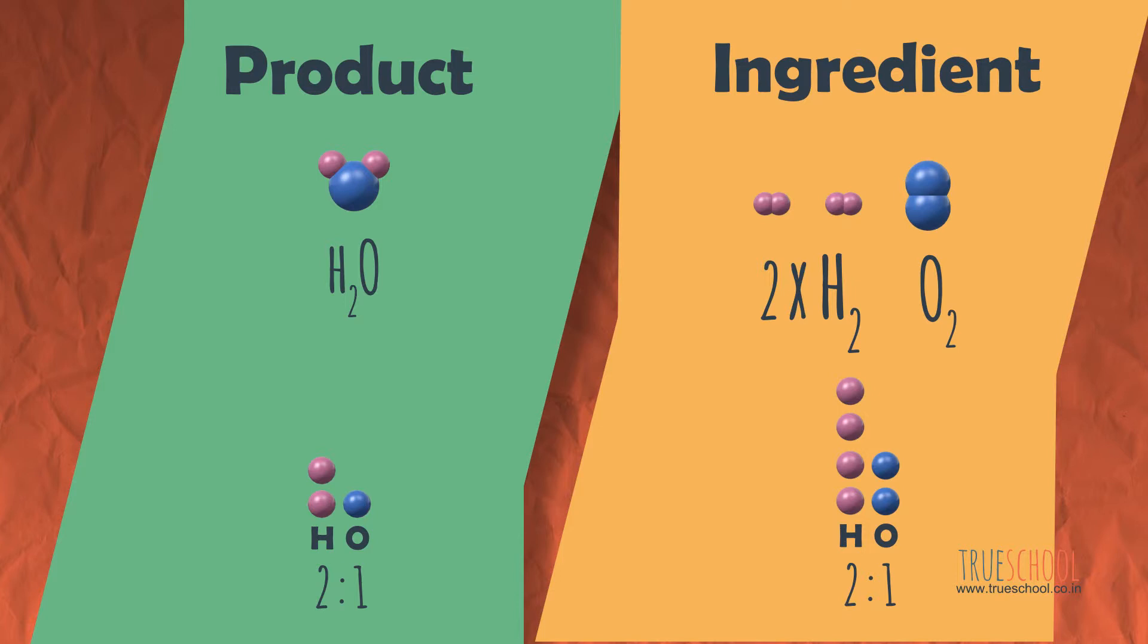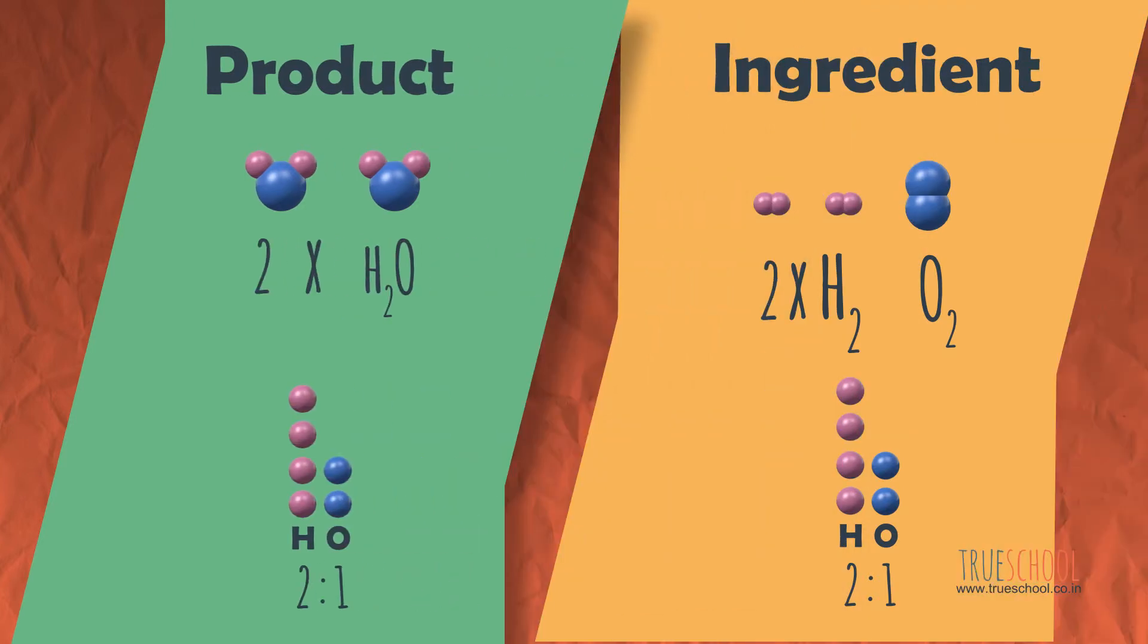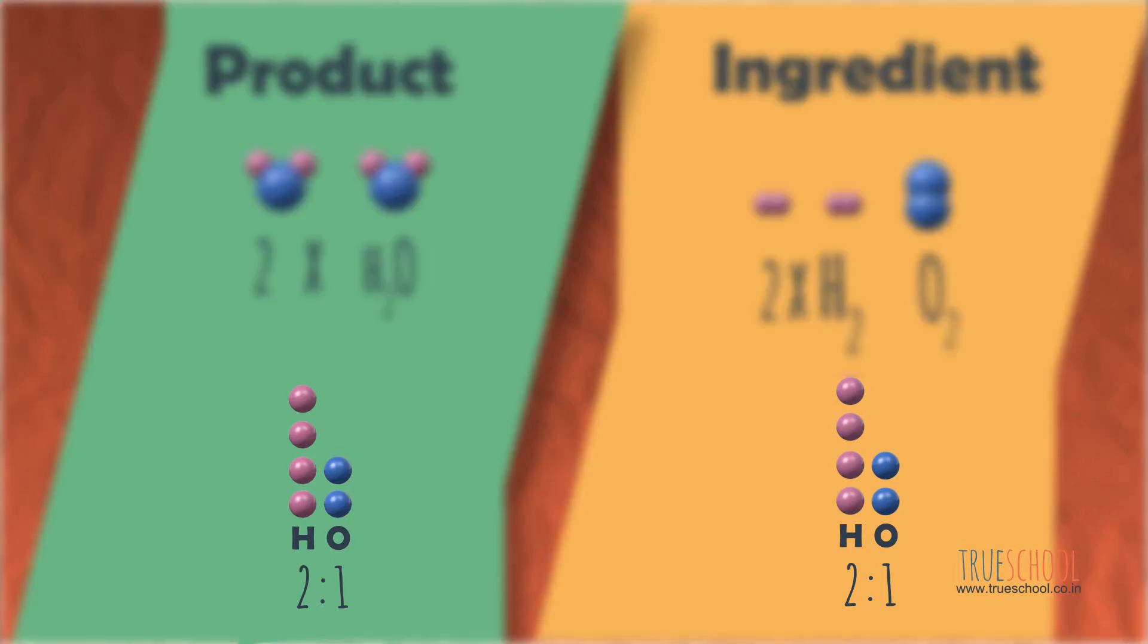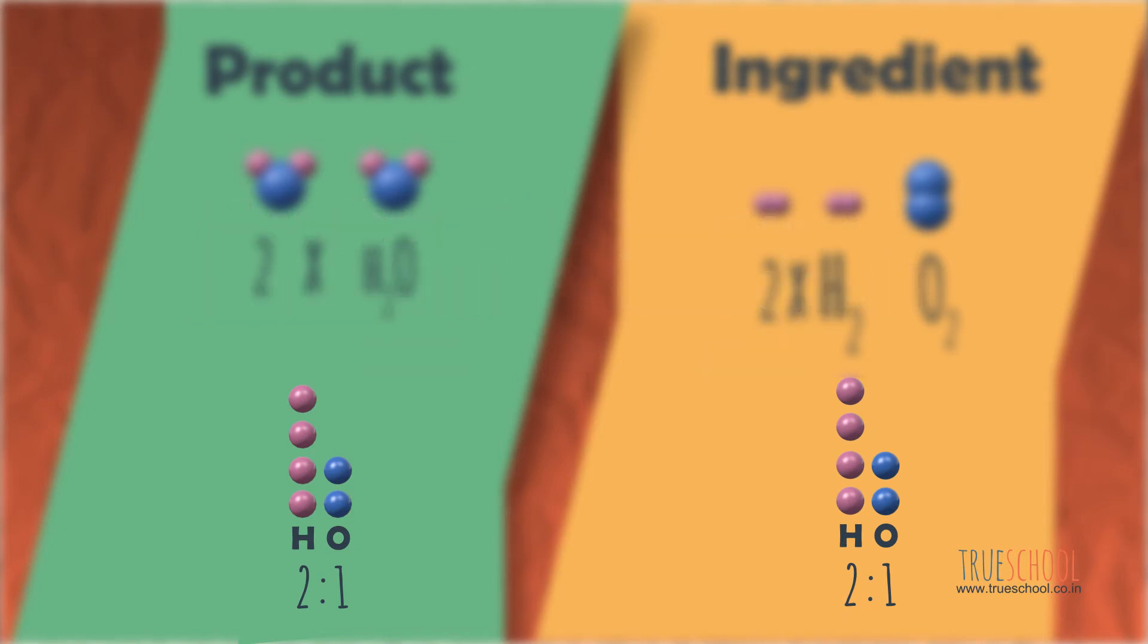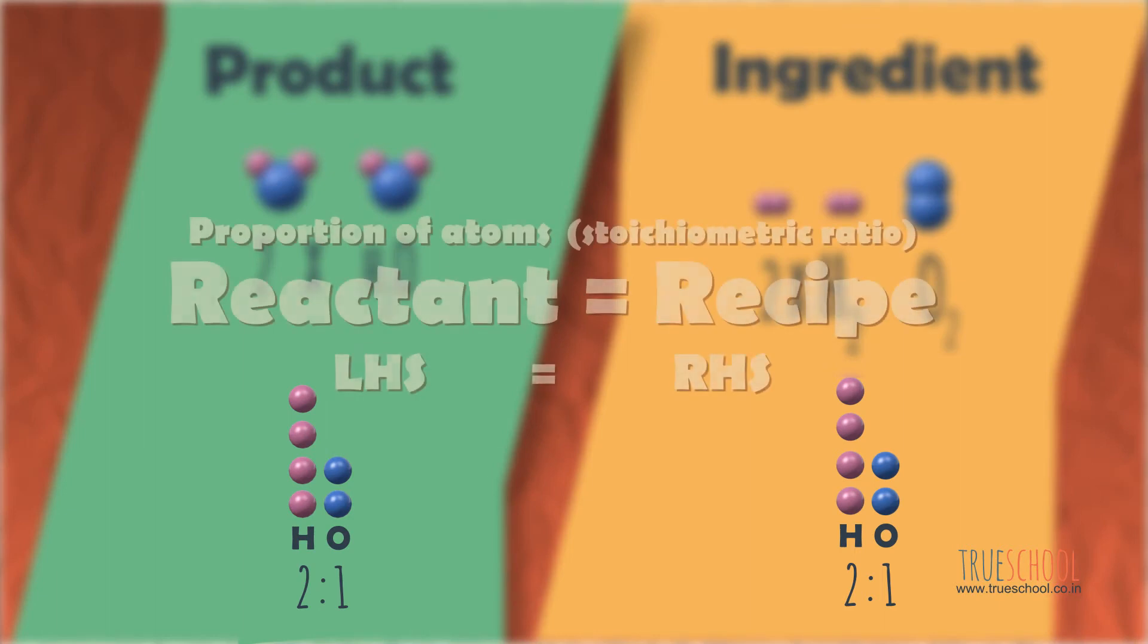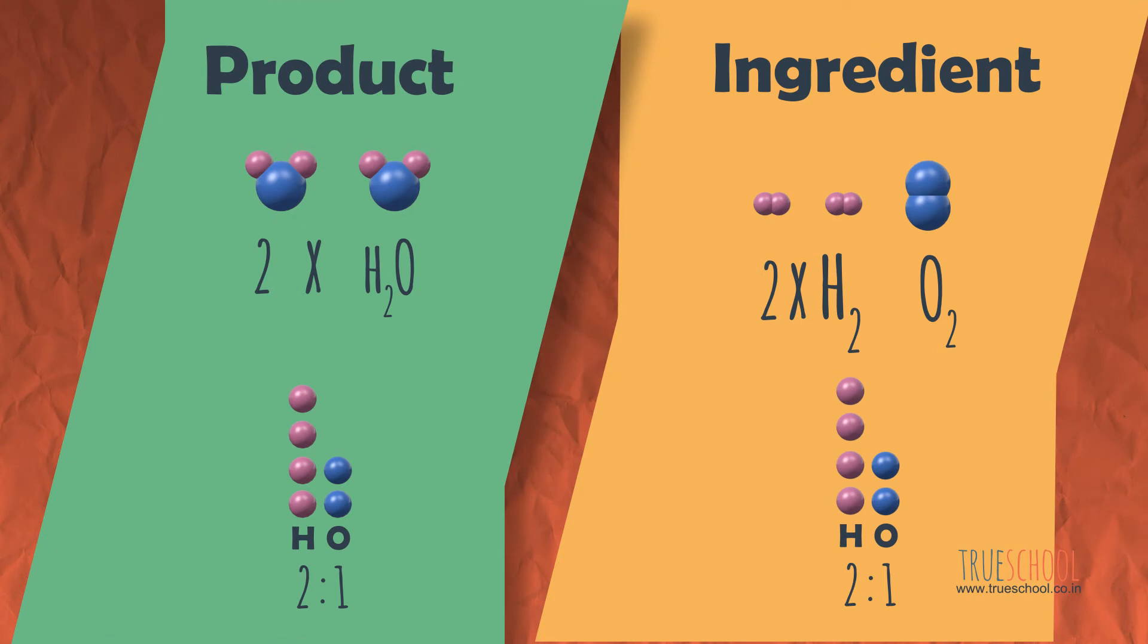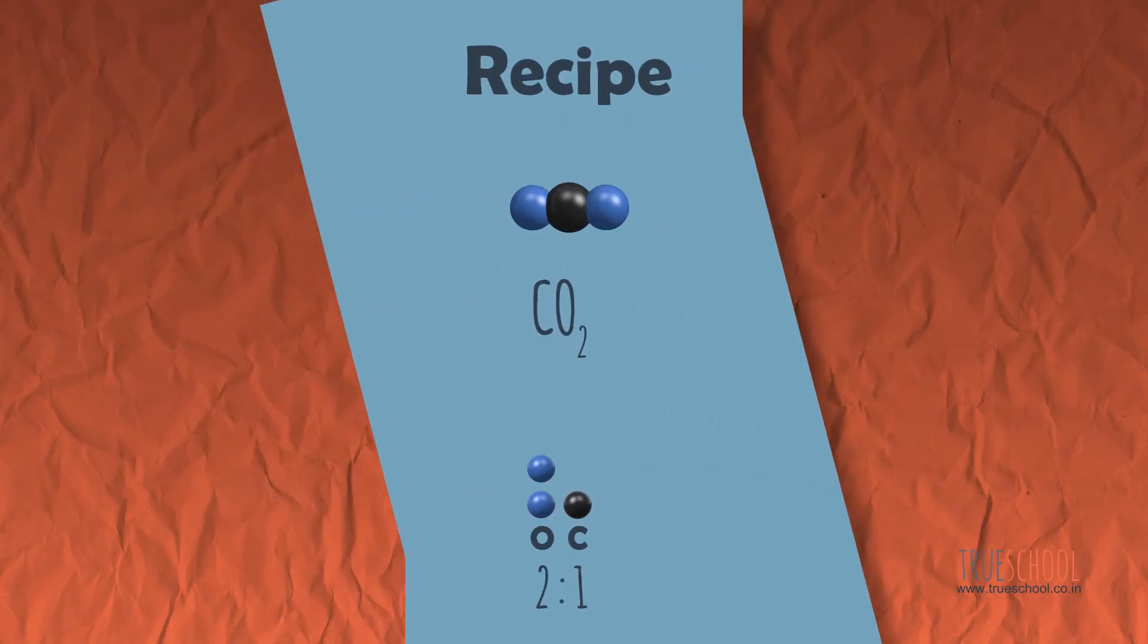And if we let this react, we will get two molecules of water. There are only two things you should understand from this example. First, you need to keep count of the number of each molecule and number of atoms on the reactant side and the product side. Second, you should understand that molecules have a fixed proportion of atoms constituting them, which should be seen in both ingredients and recipe. That's all. Let's look at a different example.